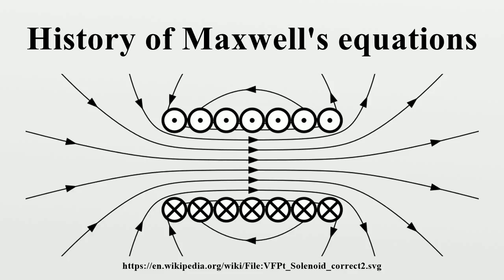The physicist Richard Feynman predicted that, from a long view of the history of mankind, seen from say 10,000 years from now, there can be little doubt that the most significant event of the 19th century will be judged as Maxwell's discovery of the laws of electrodynamics. The American Civil War will pale into provincial insignificance in comparison with this important scientific event of the same decade.